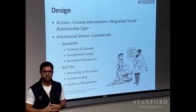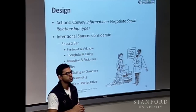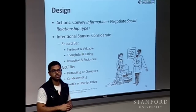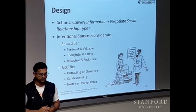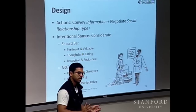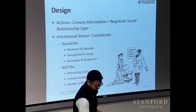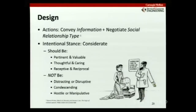We built this system and started playing with it. It became immediately apparent that it's very difficult to introduce actions into an already overloaded communication channel. Imagine five people talking and then an agent trying to say something — it's very easy to disrupt communication and get participants annoyed. A big takeaway is that any action has two components: you're communicating information, but you're also negotiating a relationship type. It's that old adage — it's not what you say, it's how you say it. Are you trying to dominate? Command? Be friendly? We want to be perceived as pertinent and thoughtful, not distracting, condescending, or hostile.